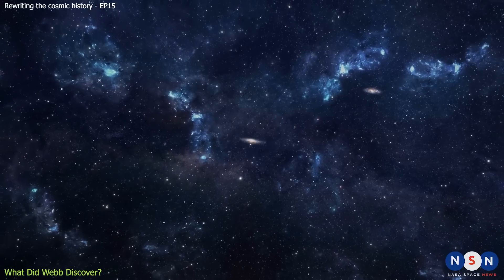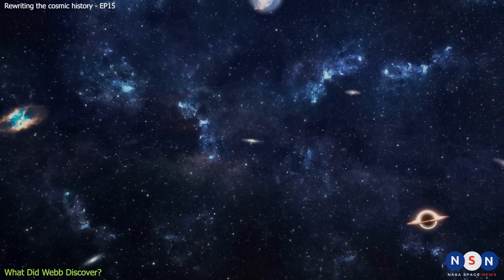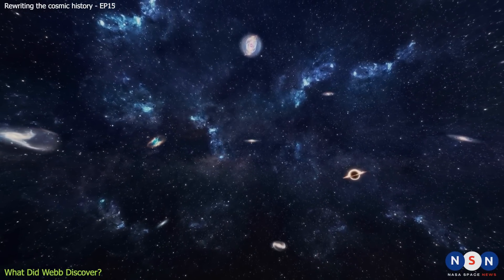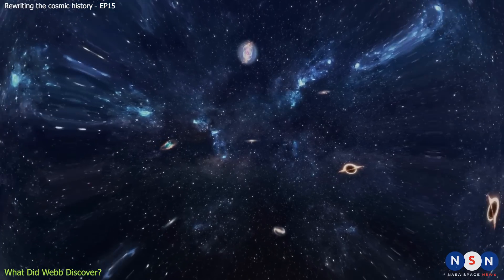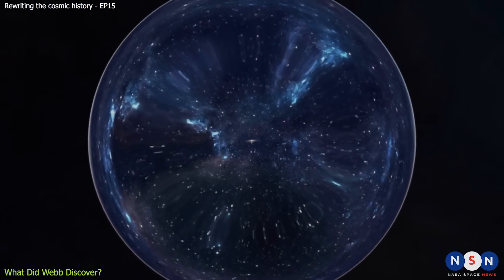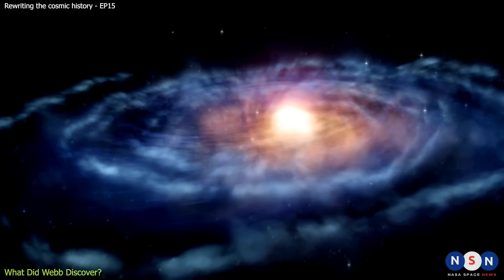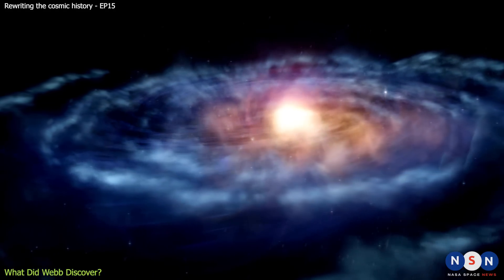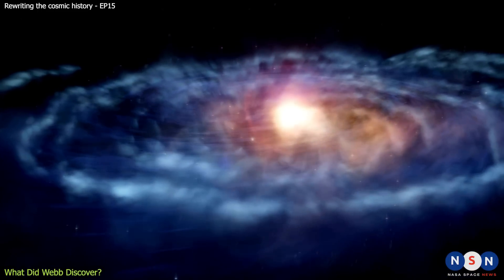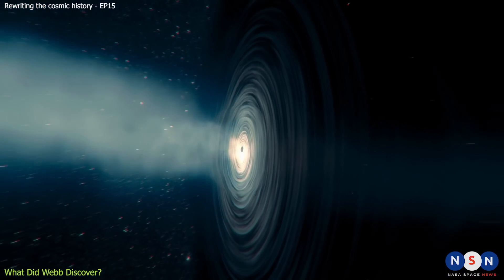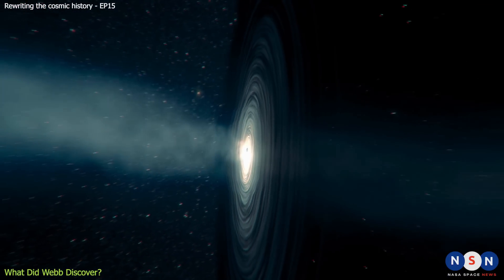But what makes this black hole even more remarkable is its size and brightness. The black hole has a mass of about 9 million times that of the sun, which is much smaller than most other supermassive black holes in the early universe, which typically have masses of over 1 billion suns. And yet, despite its relatively small size, this black hole is extremely bright. It emits so much energy that it outshines its entire galaxy by a factor of 1,000.